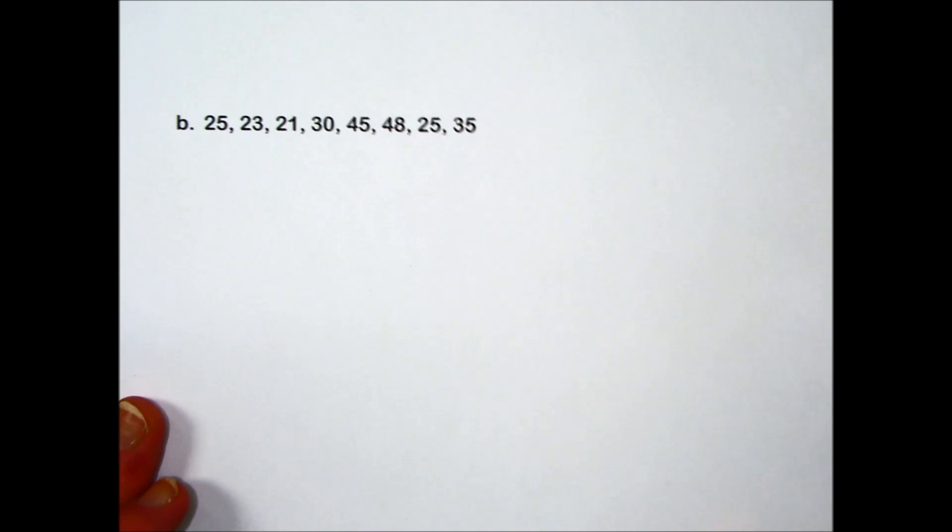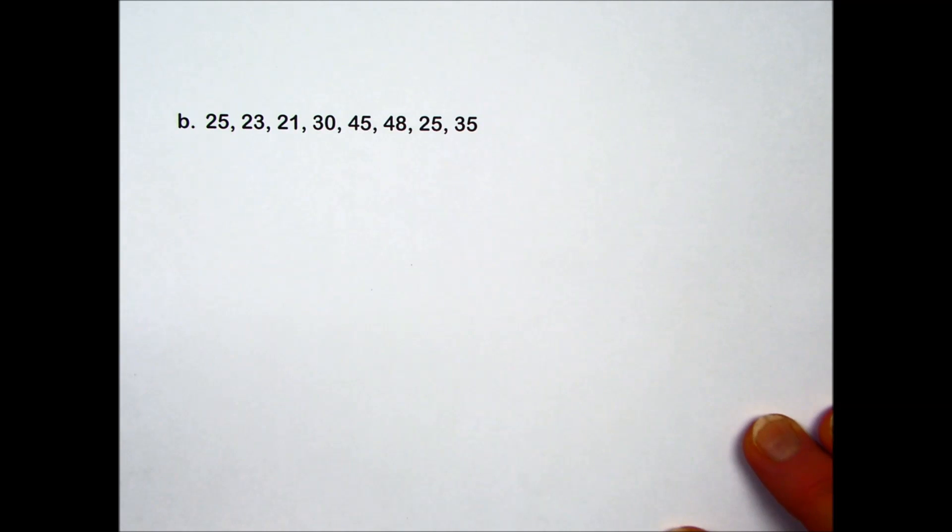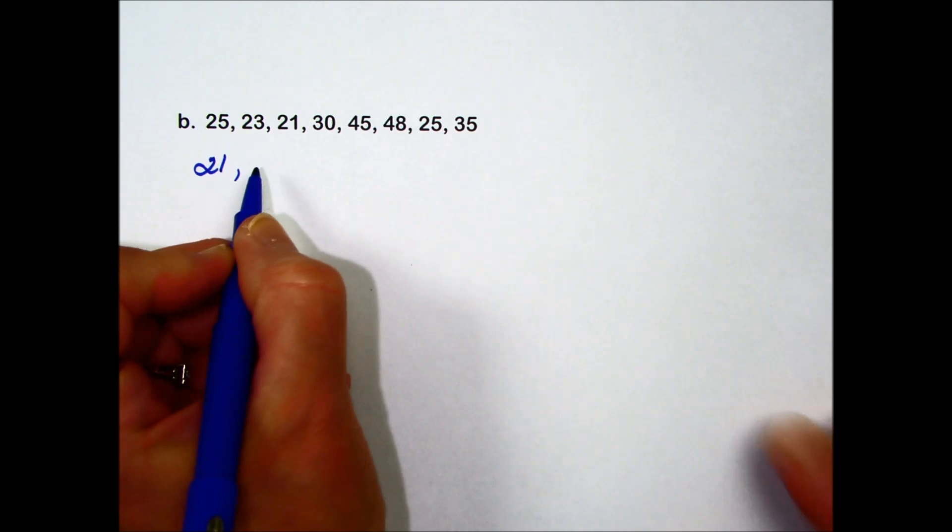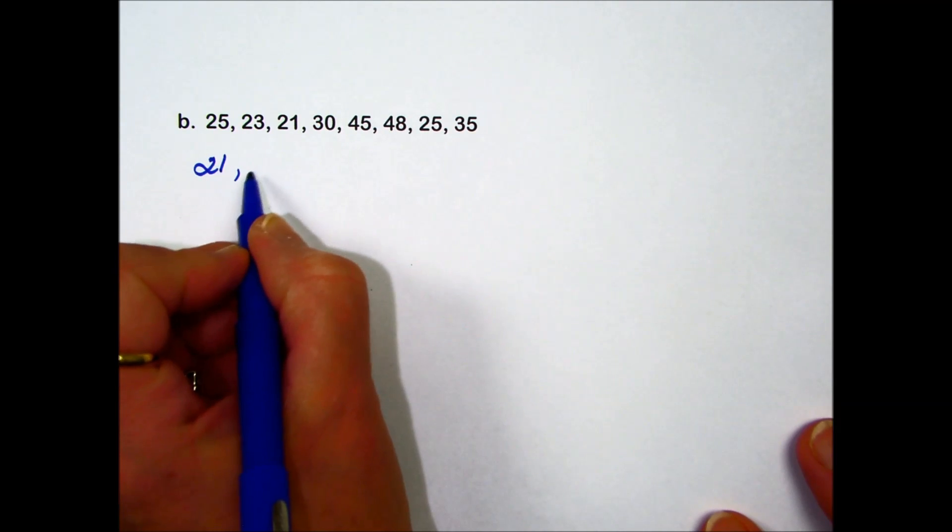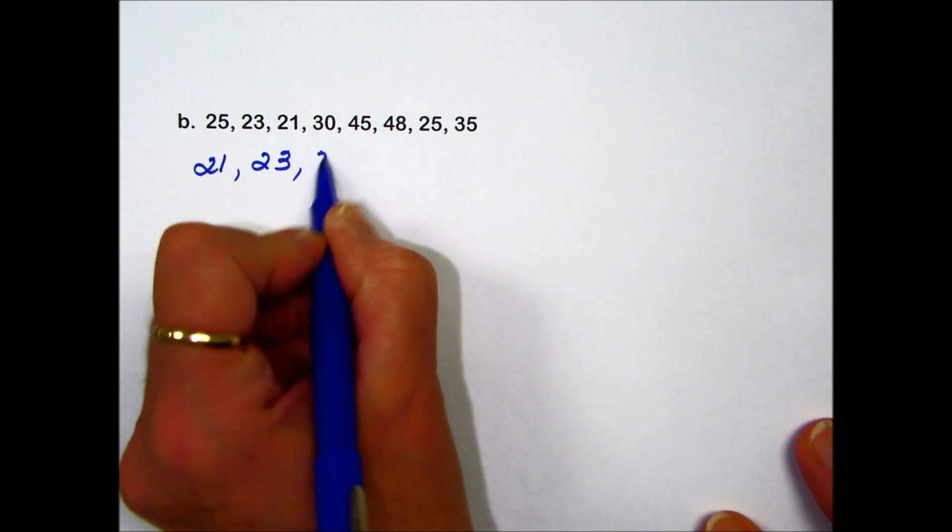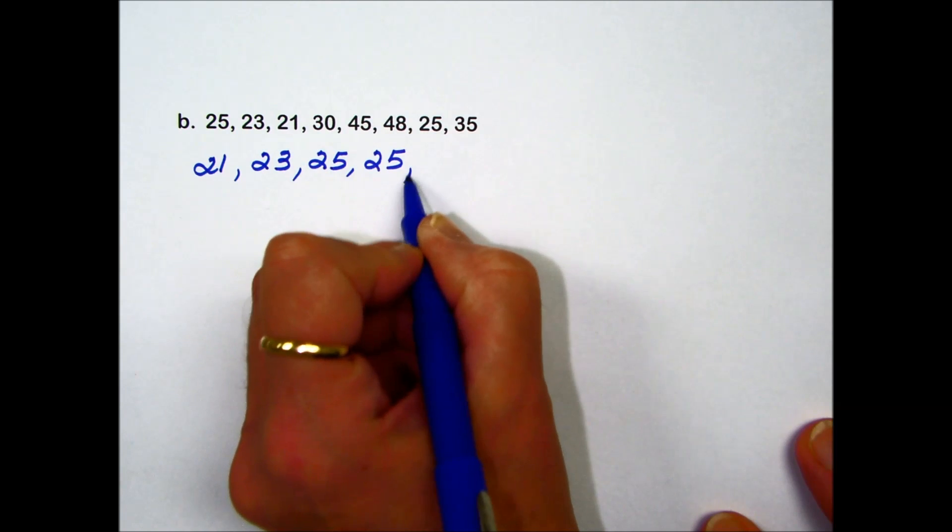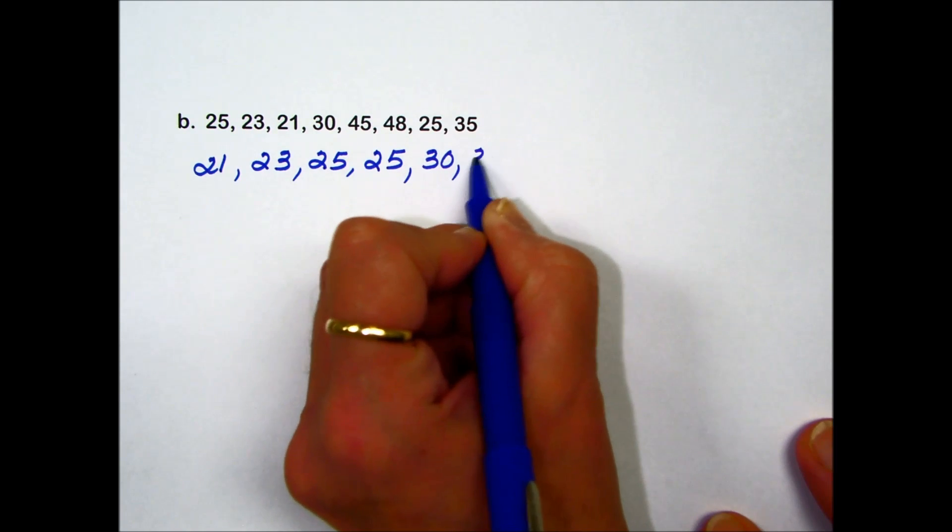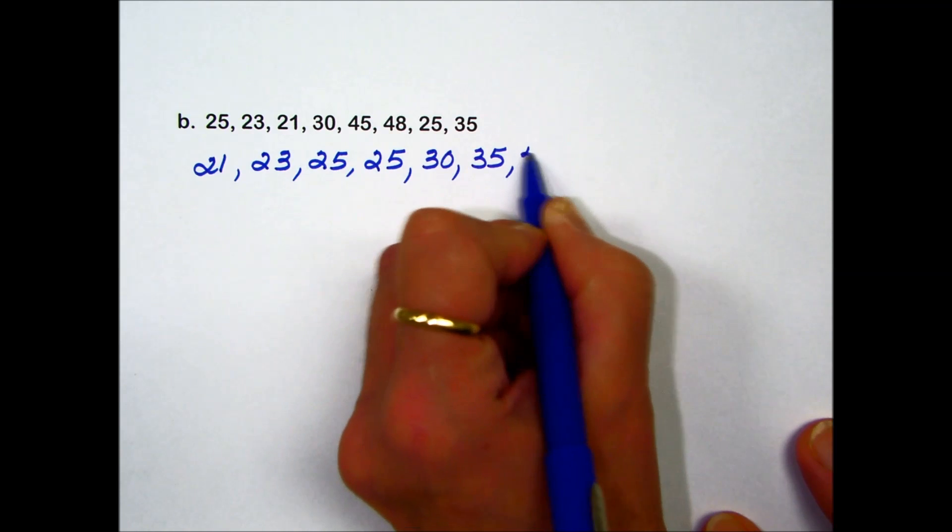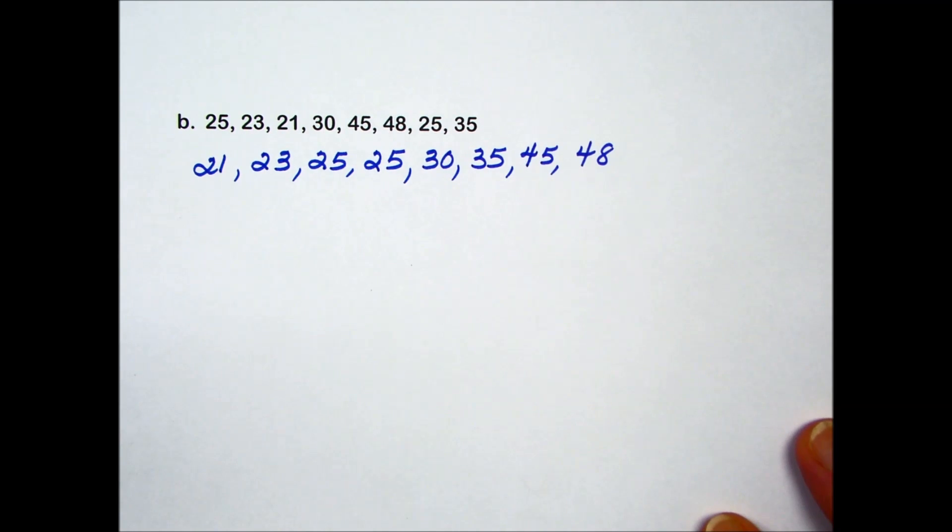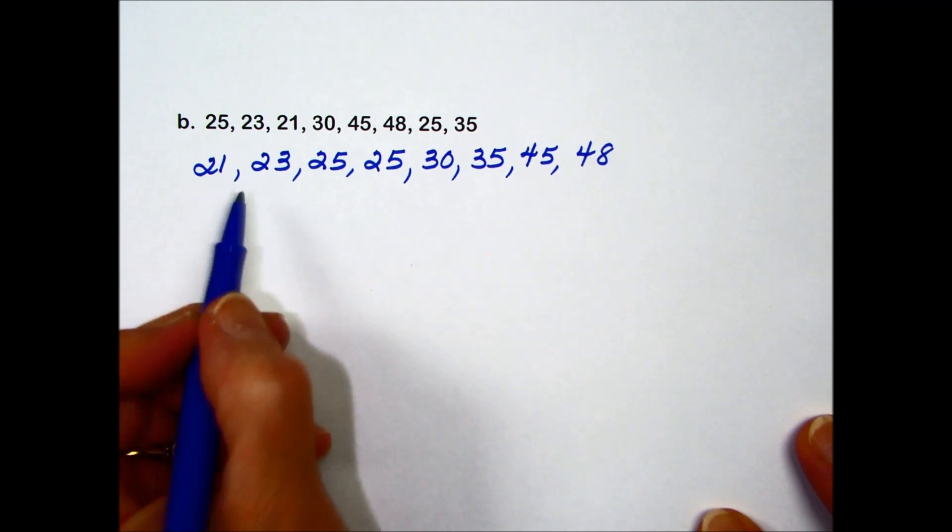The next set of numbers that they want us to find the median: they're all pretty close to one another. I can just pick the smallest and work our way through the list: 21, the next smallest would be 23, we have a 25, next largest would be 30, we have a 35, 45, and 48. You want to make sure that you haven't missed anything and that you do have them in numerical order.